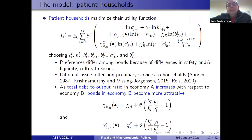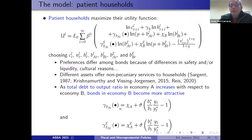Here you can find the utility function for patient households, who become lenders. Lenders in the model have different bonds in the utility function. The parameters represent preferences for different types of bonds. Preferences for domestic bonds — both private and public — take a form that depends on an index accounting for total private debt in the foreign country compared to total private debt in Spain. When total private debt in Germany increases relative to Spain, preferences for domestic Spanish bonds increase. This is how the risk premium is introduced.